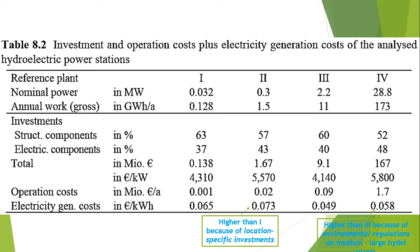Due to the high investments, lower generation cost can only be achieved at full load hours that exceed those assumed within this example, and at very low cost for the plant operation, for example in the case of private ownership. In contrast, the analyzed small hydroelectric power station with a capacity of 300 kilowatt — that was plant 2 — costs around 0.73 euros per kilowatt hour.